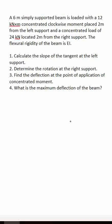A 6-meter simply supported beam is loaded with a 12 kNm concentrated clockwise moment placed 2 meters from the left support, and a concentrated load of 24 kN located 2 meters from the right support. The flexural rigidity of the beam is EI. We are asked to: first, calculate the slope of the tangent at the left support; second, determine the rotation at the right support; third, find the deflection at the point of application of the concentrated moment; and fourth, find the maximum deflection of the beam.